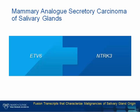Mammary analog secretory carcinoma of salivary glands is characterized by the same translocation seen in secretory carcinoma of the breast — t(12;15). The resulting fusion transcript, ETV6-NTRK3, encodes a chimeric tyrosine kinase that has the potential to activate two major cellular pathways: the RAS/MAPK mitogenic pathway and the phosphatidylinositol 3-kinase/AKT pathway. Interestingly, this fusion transcript is also seen in congenital or infantile fibrosarcoma, congenital mesoblastic nephroma, and in rare cases of acute myeloid leukemia.